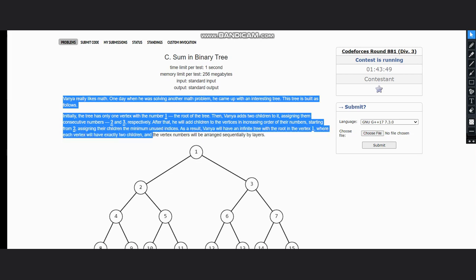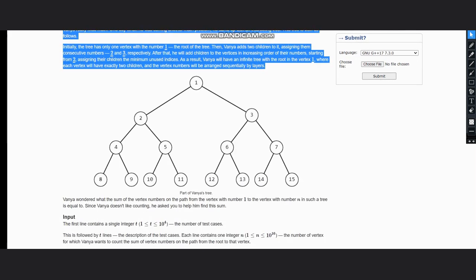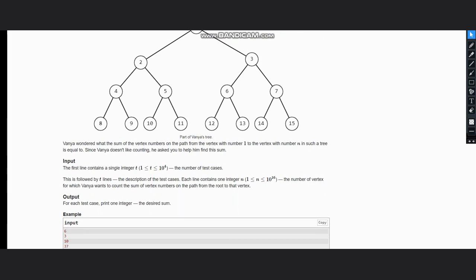As a result, Vanya will have an infinite tree with root in vertex one, where each vertex will have exactly two children and vertex numbers will be arranged sequentially by layers. So as you can see here, the vertex numbers are arranged as follows. Now what we need to do: we need to find the sum of the vertices on the path from number one, which is the root, to the vertex with number n.